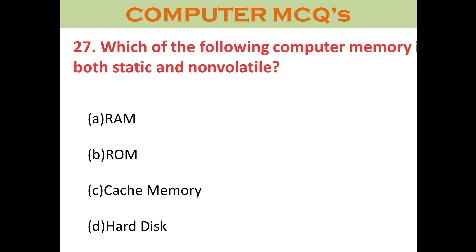Question twenty-seven: Which of the following computer memory is both static and non-volatile? A. RAM. B. ROM. C. Cache memory. D. Hard disk. The right answer is B: ROM — Read Only Memory.